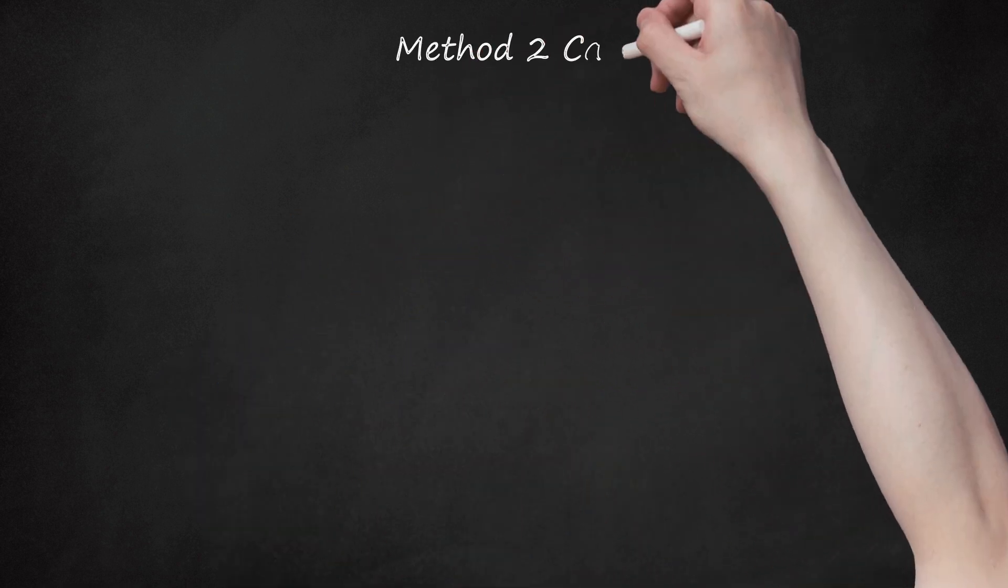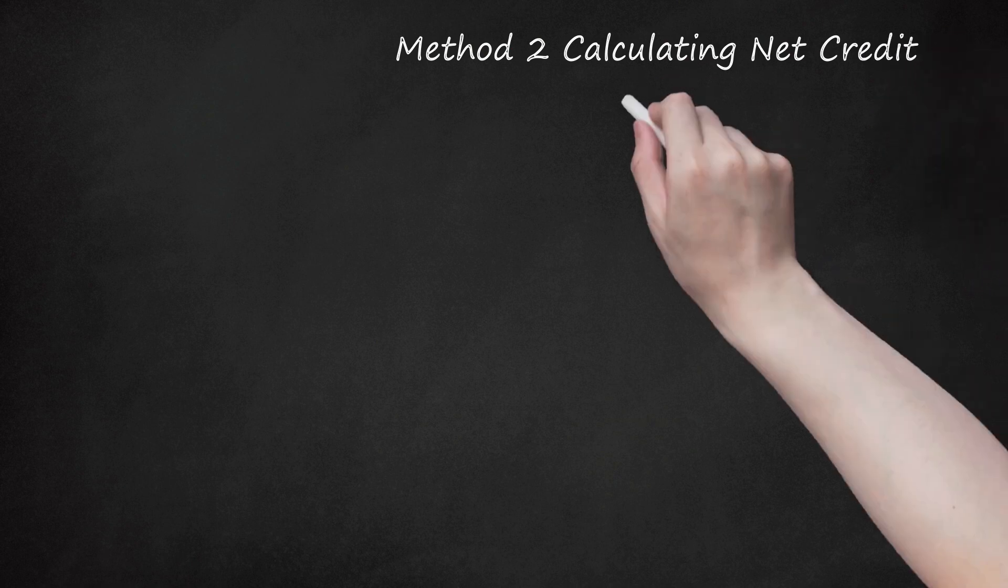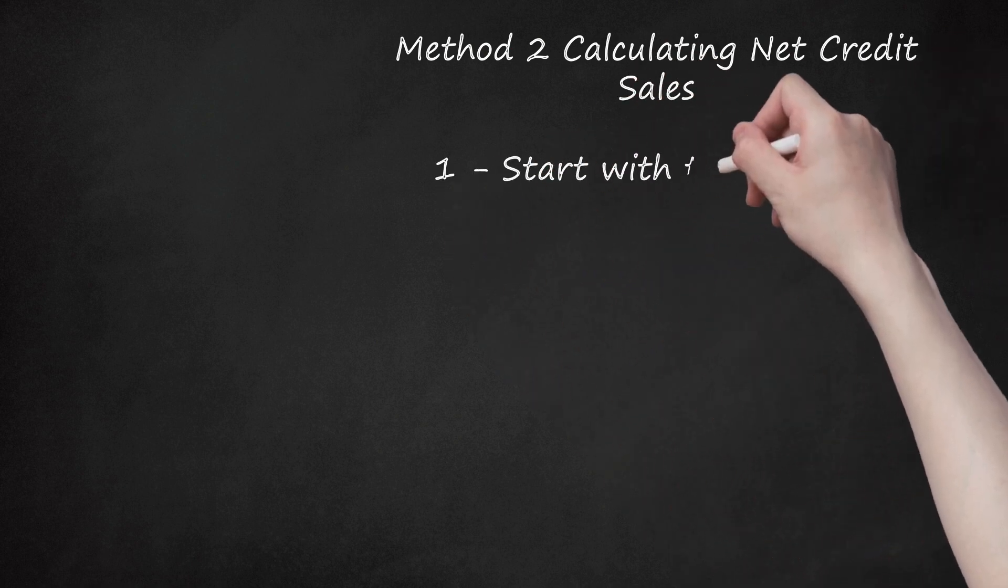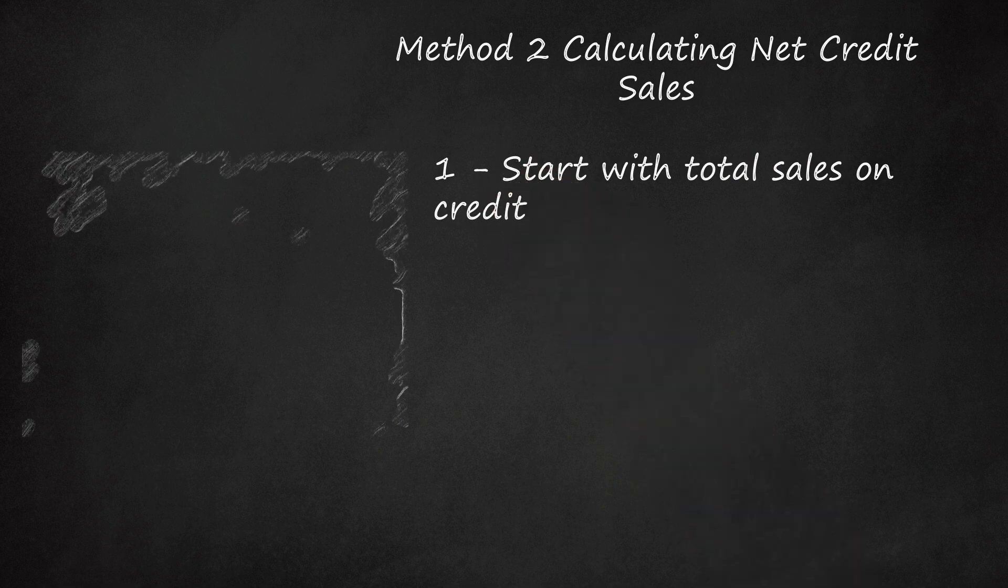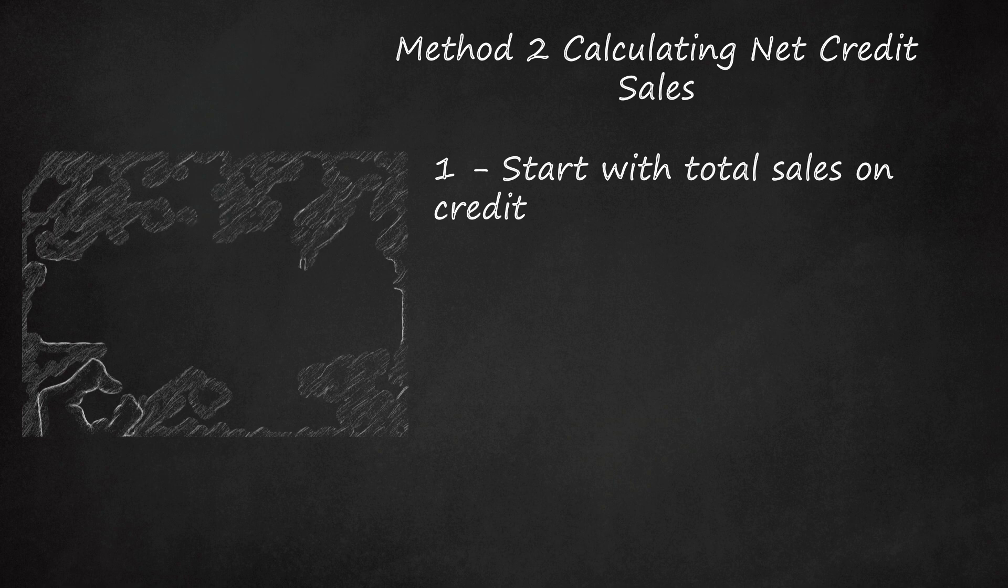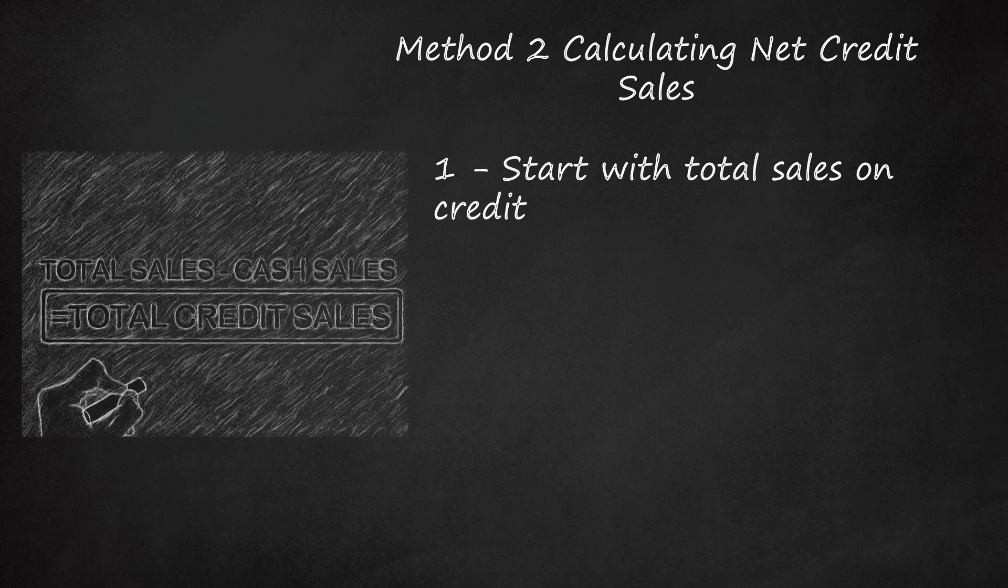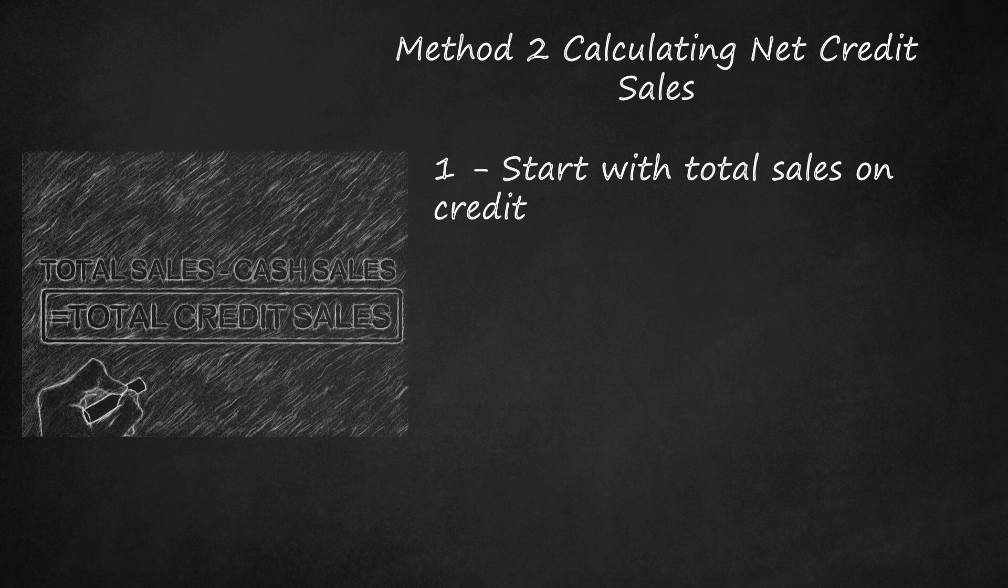Method 2: Calculating Net Credit Sales. Start with total sales on credit. Net credit sales is a measure of how much credit a business extends to its customers. It takes into account any reductions in credit sales caused by discounts, returns, and other allowances. Net credit sales is also useful for calculating a number of financial ratios.